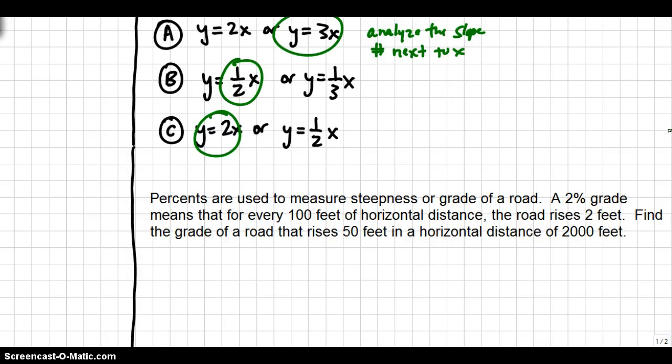Students also need to be able to recognize slope when it's involved in a word problem. Let's look at this one. Percents are used to measure steepness or the grade of a road. A 2% grade means that for every 100 feet of horizontal distance, the road will rise 2 feet. Find the grade of a road that rises 50 feet in a horizontal distance of 2,000 feet.